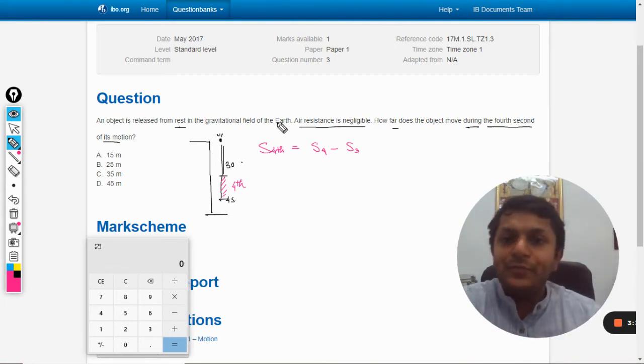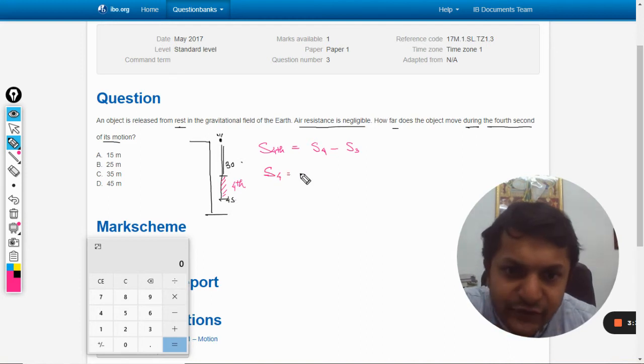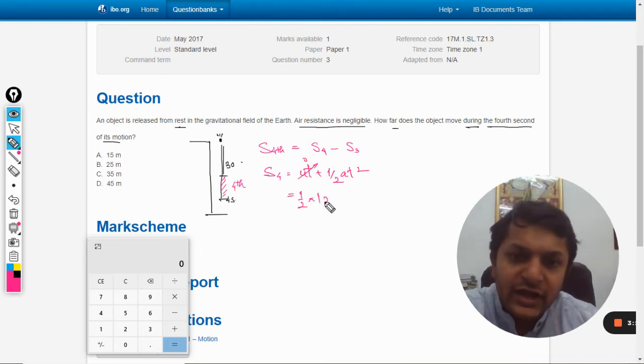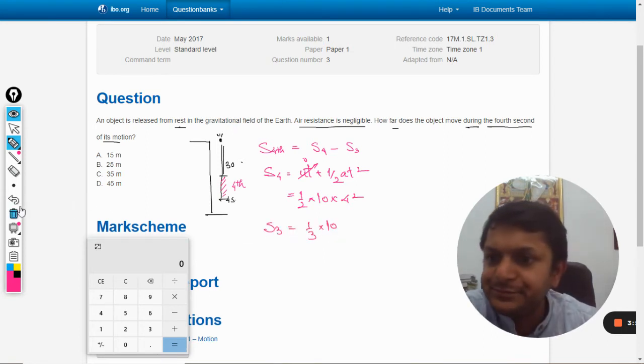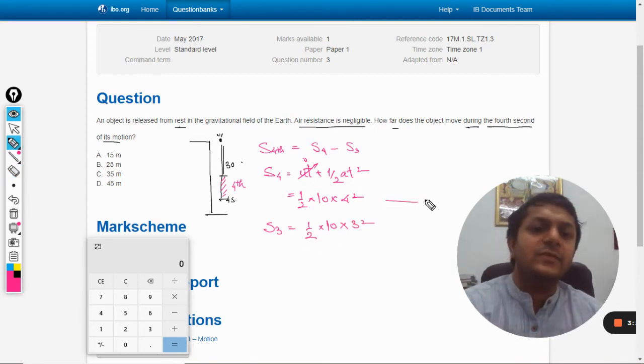Now, distance traveled in four seconds will be u·t + ½at². U is zero, ½ × g × 4². Distance traveled in three seconds will be similarly this, so four seconds and this is three seconds.